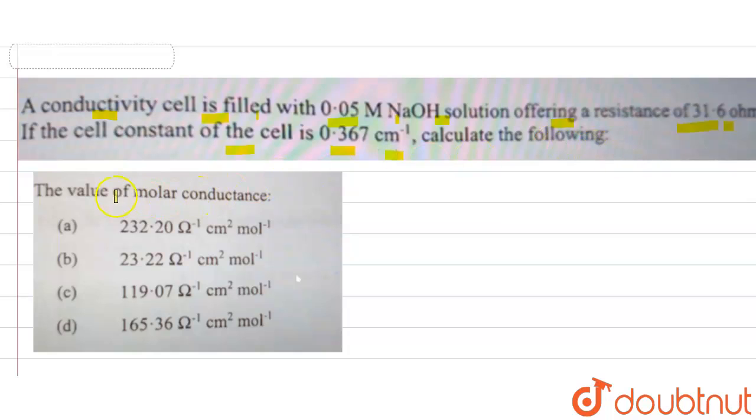What is molar conductance? We represent molar conductance by this symbol. The formula for the molar conductance is specific conductance divided by the molarity, multiplied with the thousand.